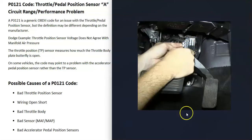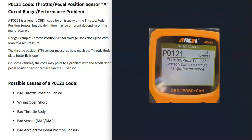On some vehicles, there's also going to be an accelerator pedal position sensor located on the pedal itself. It can vary a little bit — sometimes there's both. By far the most common is going to be the throttle position sensor, but keep in mind there can also be a sensor on the pedal itself, or a combination of both.